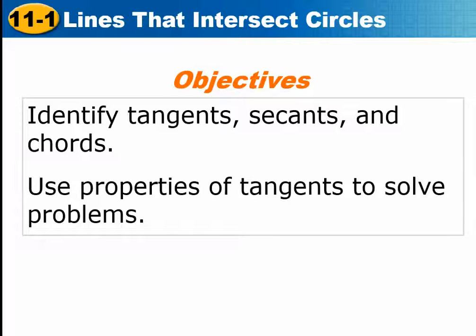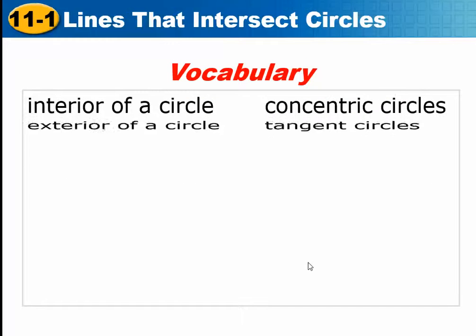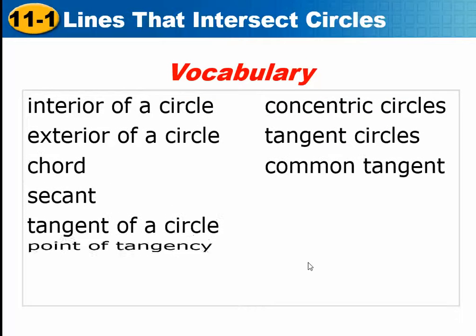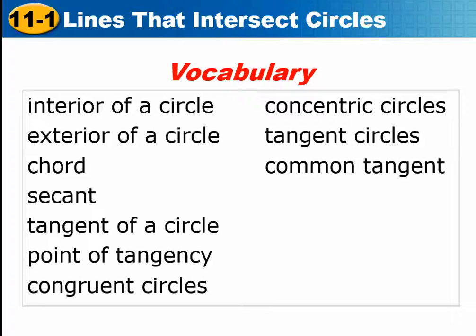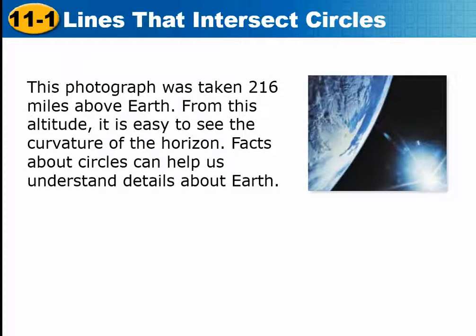There are a lot of vocabulary words in this section. Here are some of them. There is a lot, as I said. This photograph was taken 216 miles above the Earth. From this altitude, it's easy to see the curvature of the horizon. Facts about circles can help us understand details about Earth.